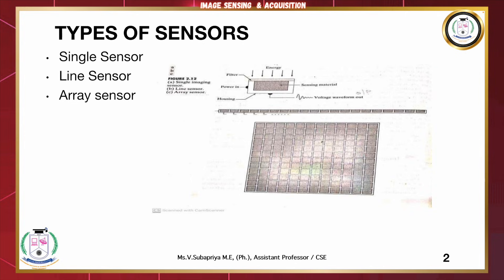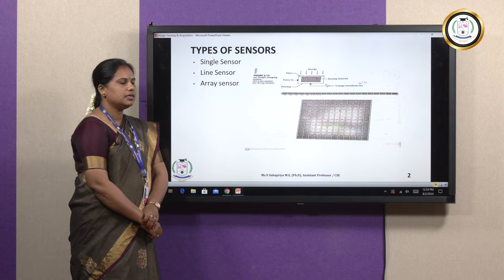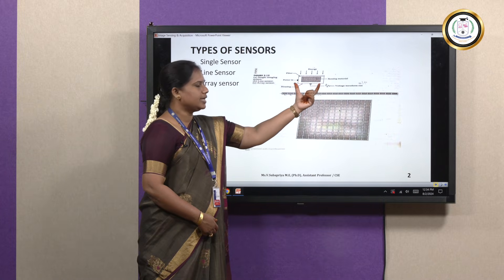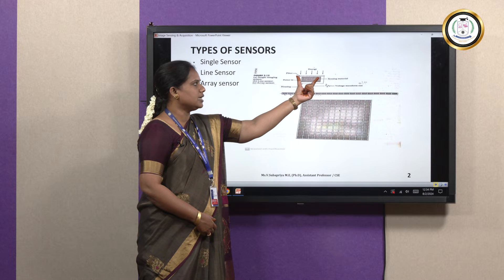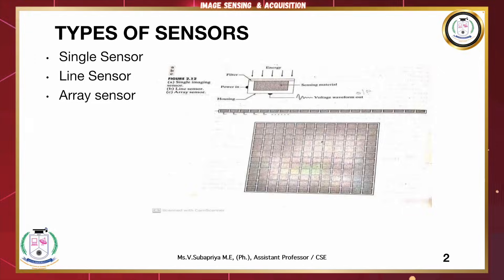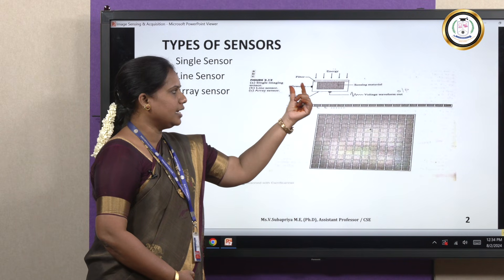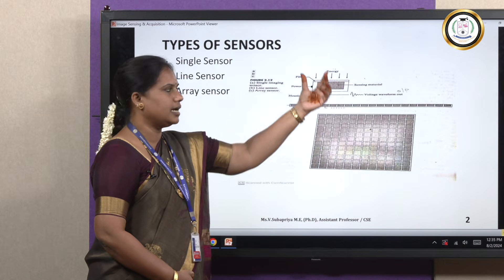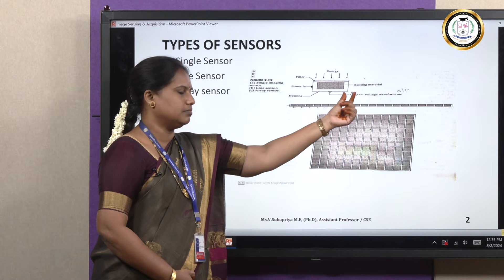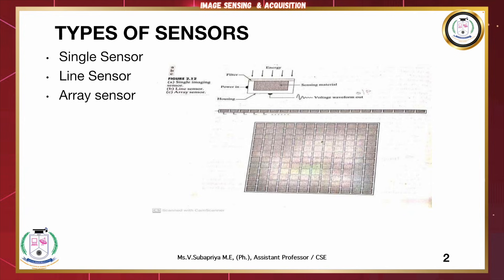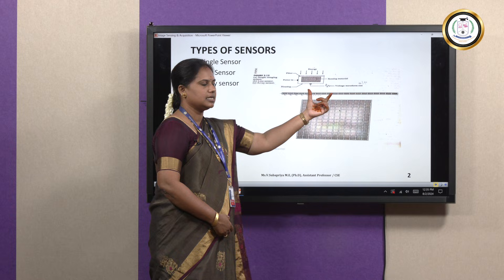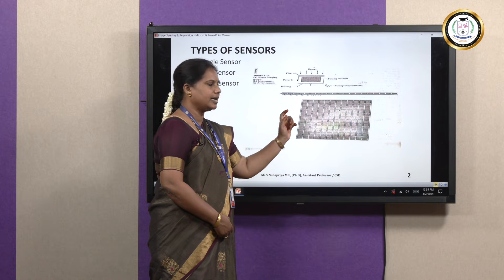For sensing an object, we are in need of sensors. There are three types of sensors. Number one is a single sensor, number two is a line of sensors, and number three is an array of sensors. The single sensor contains a sensing material. On the top of the sensor there is a light illumination source and a filter. The electrical energy in combination with the sensing material and an illuminated source gives us a voltage form of the image. The line sensors are single sensors arranged in a linear manner, and the array of sensors is the same sensors arranged in the form of an array.